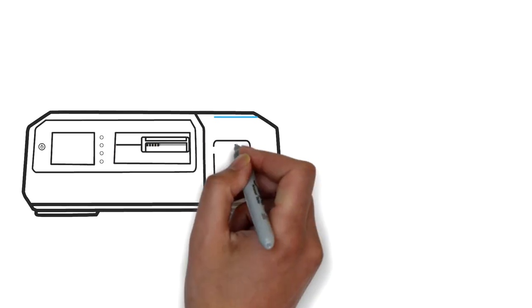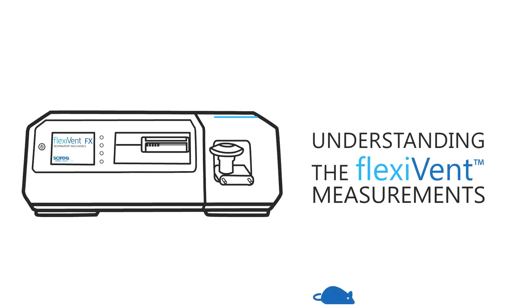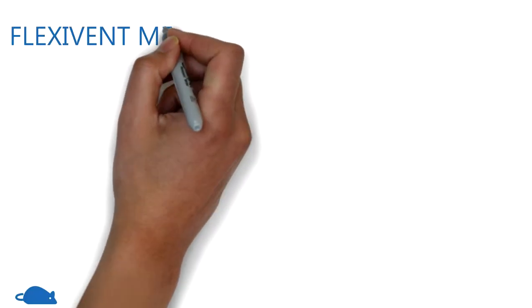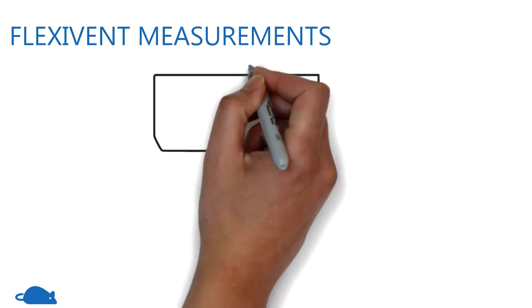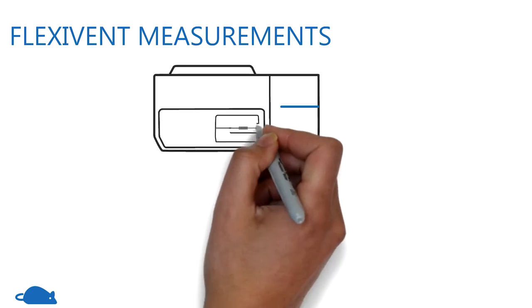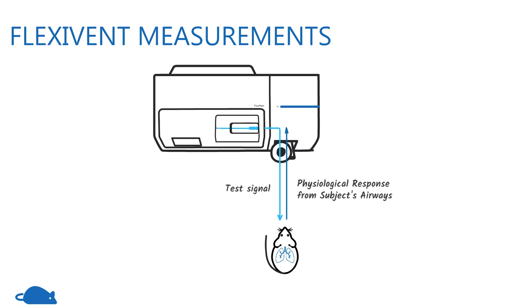The following video will provide a brief overview of the flexi-vent manoeuvres and outcomes. The flexi-vent uses an active measurement technique. Using this technique, test signals are introduced to the subject's airways, and through changes in pressure, volume, and flow, the mechanical properties of the respiratory system can be measured.